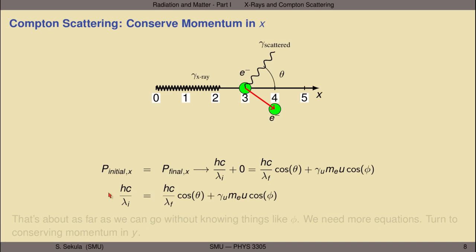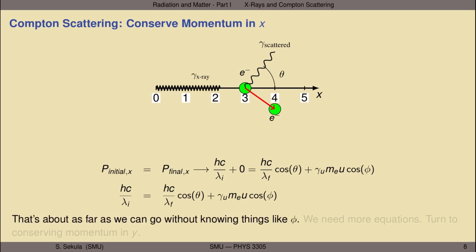The initial momentum of the x-ray is entirely along the x-axis, but only part of its final momentum lies along the x-axis: h/λ_f times cosine of the scattering angle θ. The other angle in the problem is φ, the angle between the horizontal and the scattered electron. The horizontal component of the electron's momentum is γ·m·u·cos(φ). That's as far as we can go without knowing φ — we need more equations.